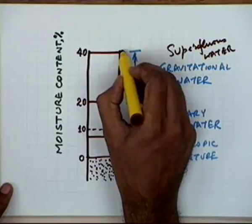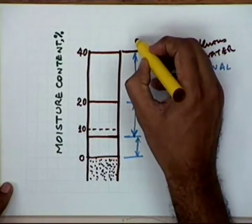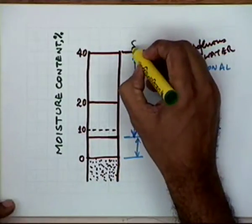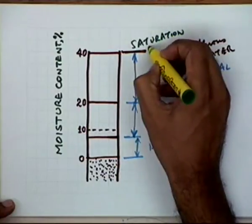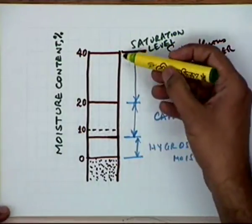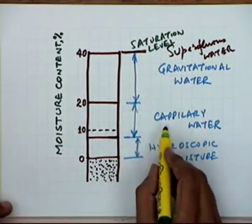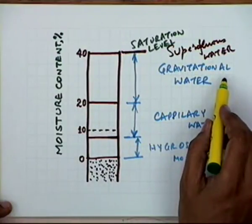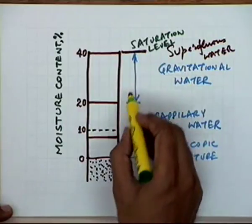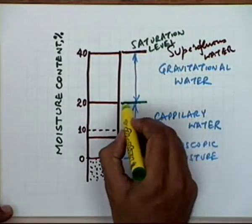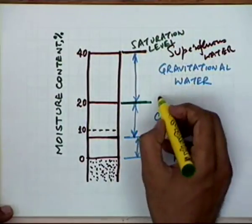Gravitational water is normally found under circumstances when you have very heavy rain and all the pore spaces have been filled with water — the soil has attained the state of saturation. Once all the superfluous water that can be drained out has been drained, which is quite a big quantity, you will attain the next level, which is the field capacity level.